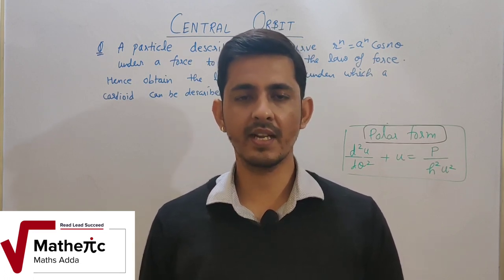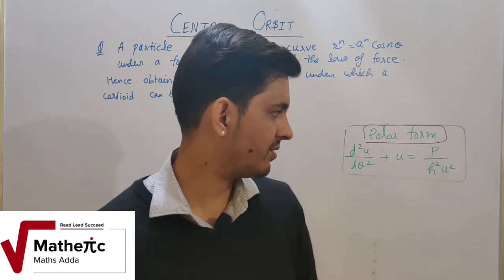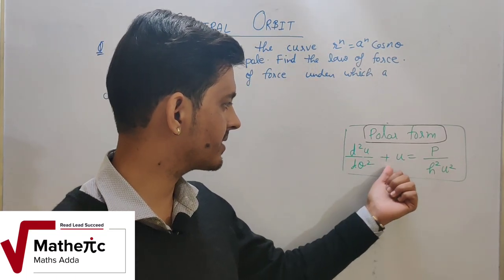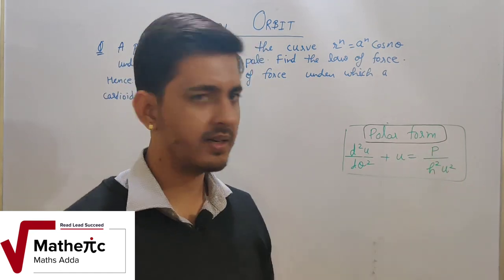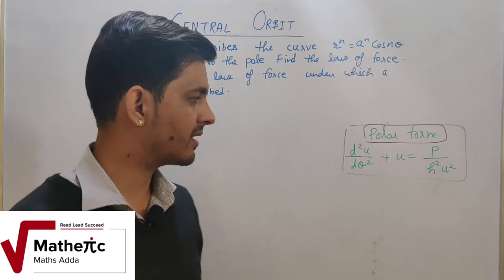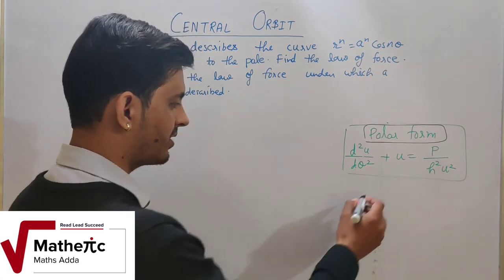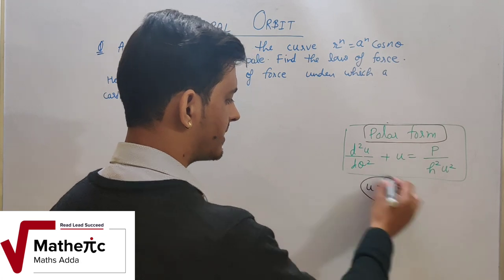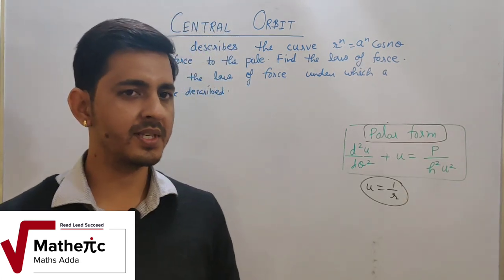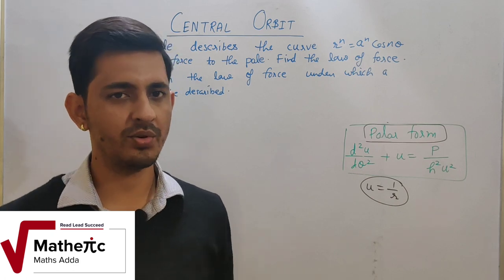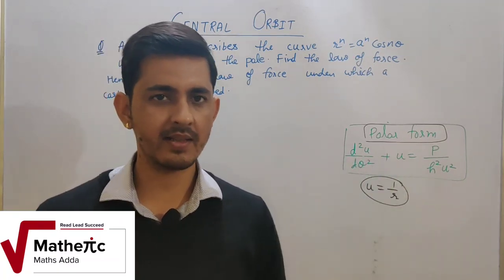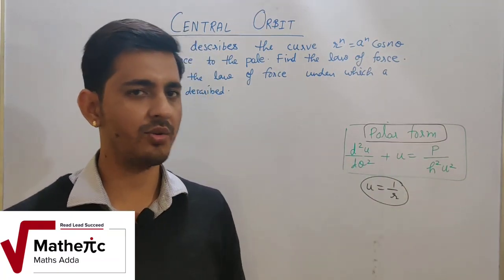The differential equation of Central Orbit in polar form that we derived was: d²U/dθ² + U = P / (H² U²), where P was the acceleration (force) acting, and U = 1/R, where R is the distance from the center O at a particular time and position. Now the first numerical: a particle describes a curve R^N = A^N cos(Nθ) under a force to the pole.